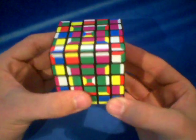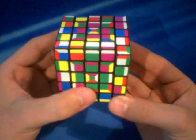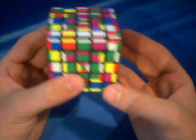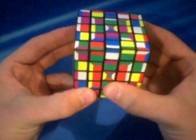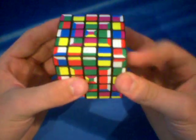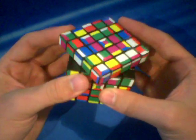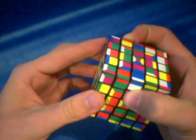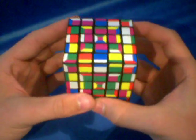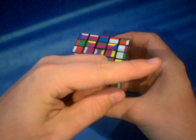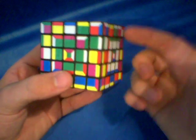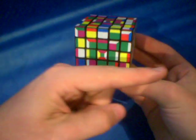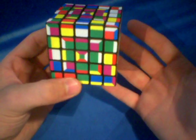And the algorithm is the commutator from the 3x3 layer by layer method. But instead you're going to be using the inner slices. So it's little r away from you, u prime, little l away from you, u, little r towards you, u prime, and little l towards you. Now I will write the actual algorithm in the sidebar over there, not the little away from you towards you. I'll put like r prime, l, l prime, that type of thing in the sidebar over there. But that's basically the algorithm that you're going to use.